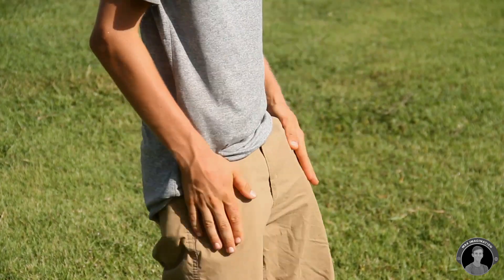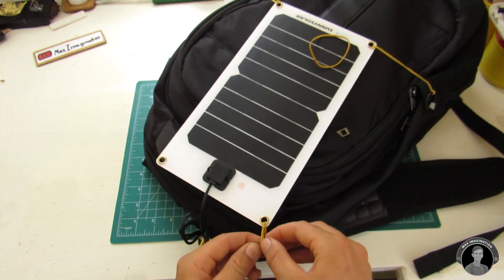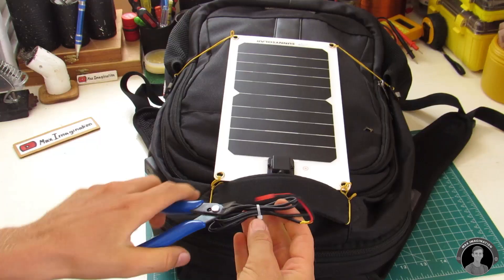So you've seen it in action with the folding solar panels. Now let's try the monocrystalline 6 watt solar panel on my backpack with the homemade power bank hooked up to it.